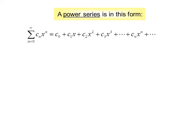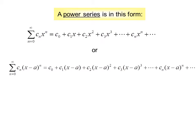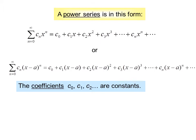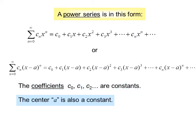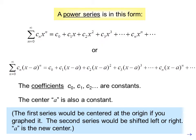A power series is in this form: the summation from n equals zero to infinity of c sub n times x to the n, where c sub 0, c sub 1, c sub 2, etc. are constants. The series in this form is centered at zero. Or, if we write the series as the summation from n equals zero to infinity of c sub n times x minus a to the n, the series has been shifted to the right a distance of a. The coefficients c sub 0, c sub 1, c sub 2, etc. are constants, and the center a is also a constant. The first series would be centered at the origin if you graphed it; the second series would be shifted left or right, and a is the new center.